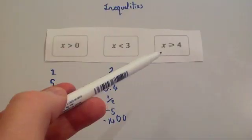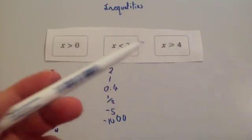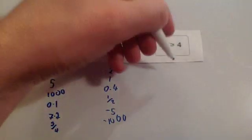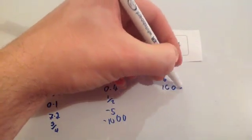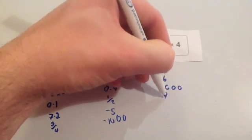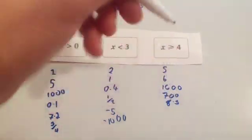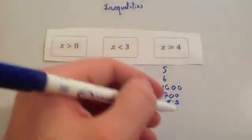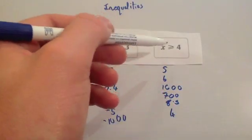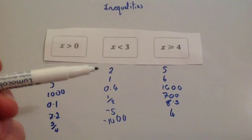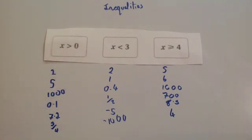This inequality says that x is larger than or equal to 4, so it could be 5, 6, 1,000, 700, or 8.5. It could be any number bigger than or equal to 4 — it could even be 4 itself, because it says bigger than or equal to 4. So it could be 4, 4.1, or any number at all that is larger than 4.